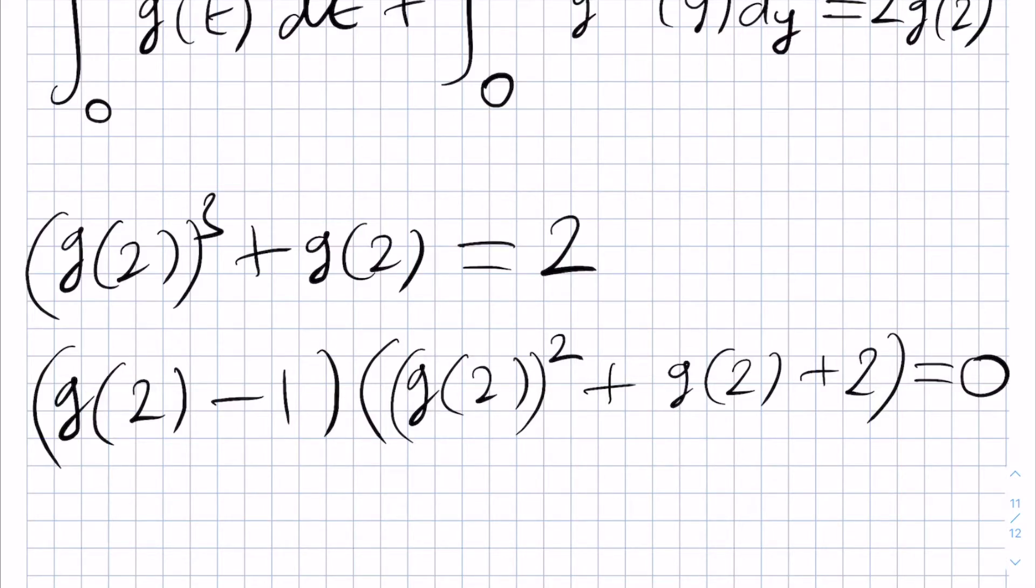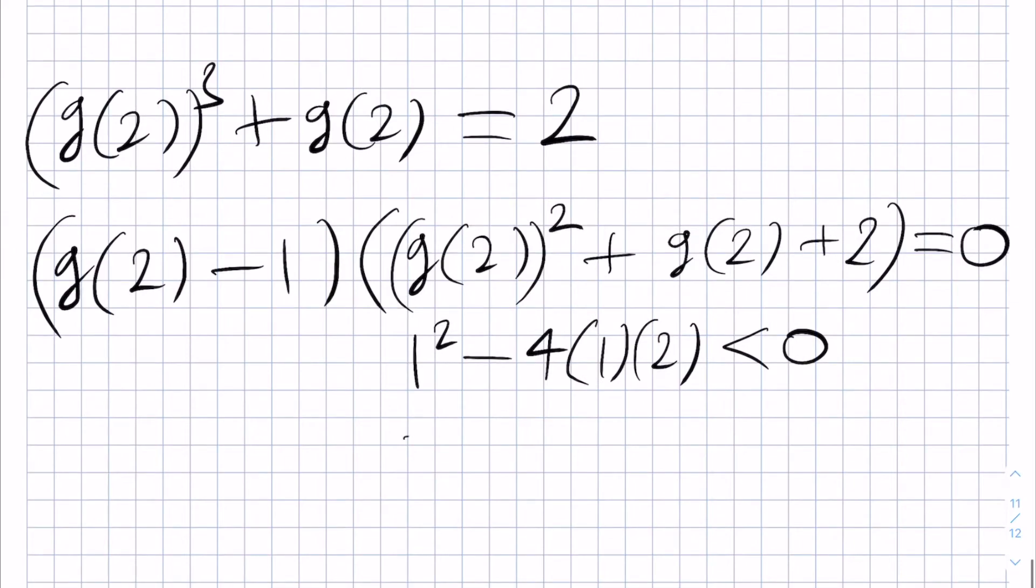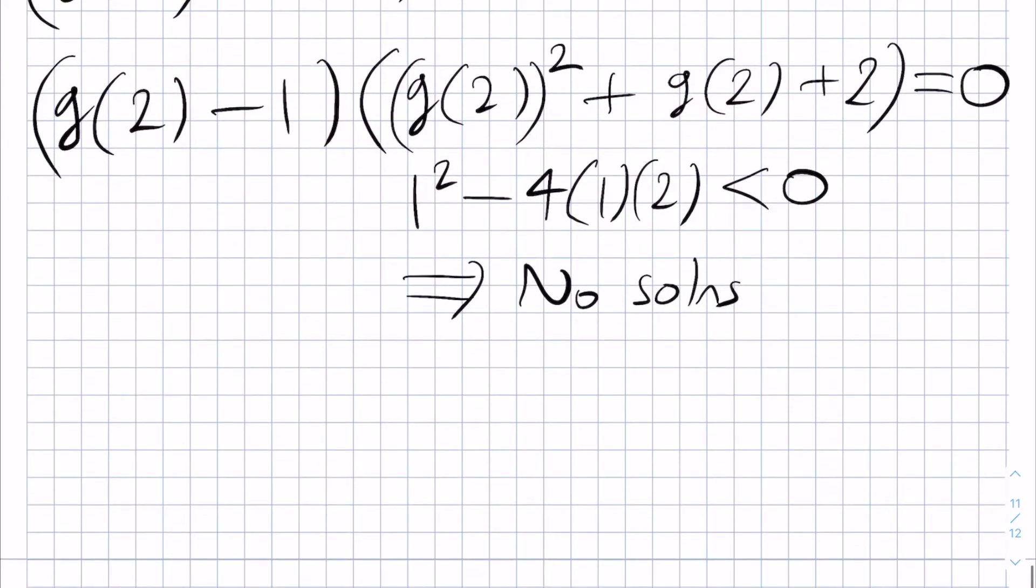minus 4 times 1 times plus 2. And this is certainly negative because we have 1 minus 8. And so we get no solutions for this bracket. Therefore, the only possible solution is that g(2) is equal to 1.